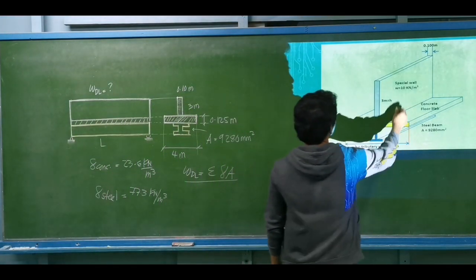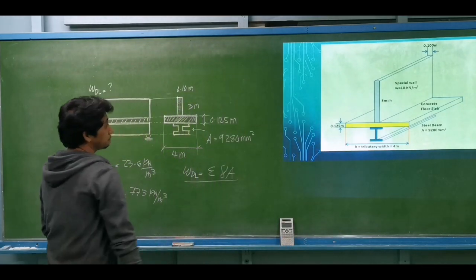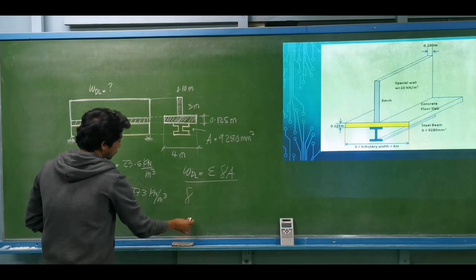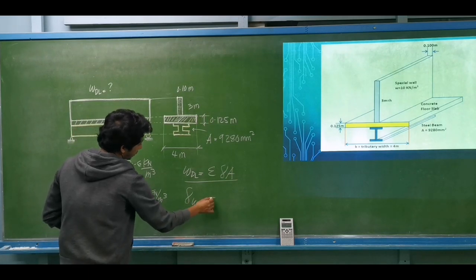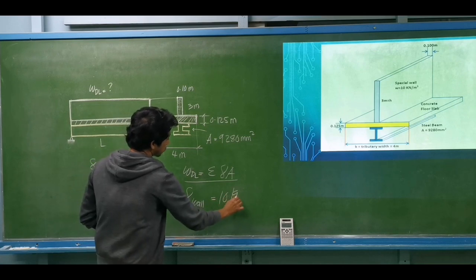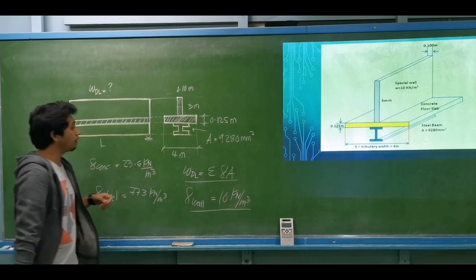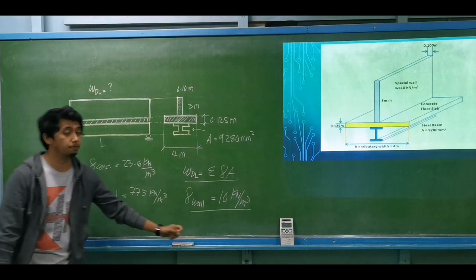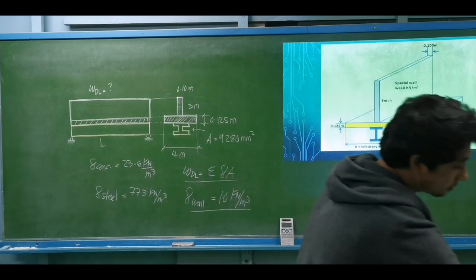We have a special case — the special wall. The unit weight of the wall is 10 kilonewtons per cubic meter. So we have contributions from the slab, the steel beam, and the special wall. Let's compute for the uniform dead load.